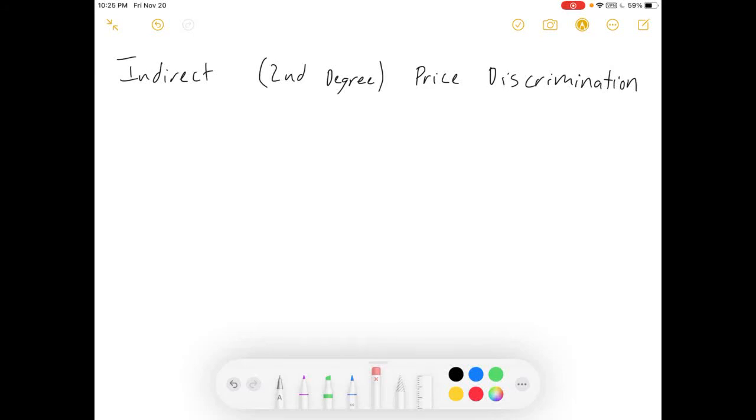Hey everybody, welcome to my video on second-degree price discrimination or indirect price discrimination. I'm going to talk about what this kind of price discrimination is and about incentive compatibility constraints. I will not be trying to prove or show any way of choosing an optimal pricing scheme. I'm just going to check incentive compatibility constraints. So, let's get to it.